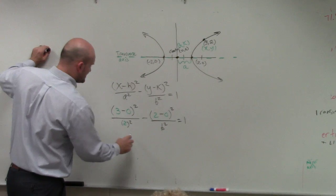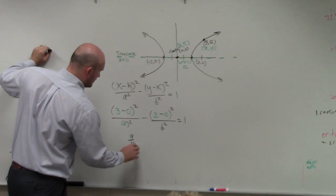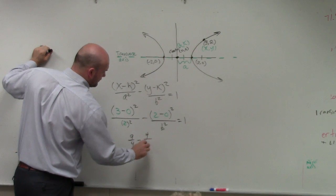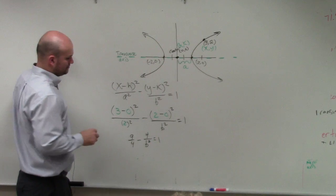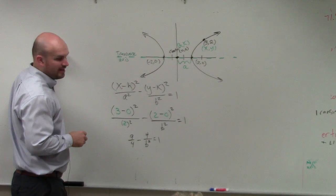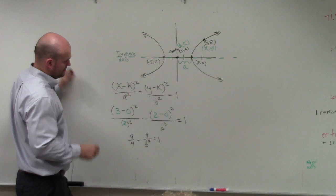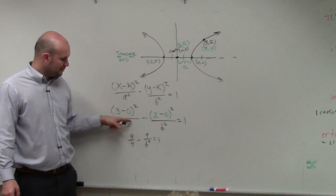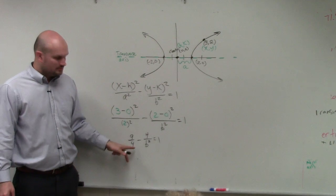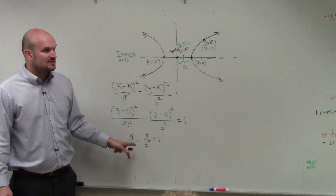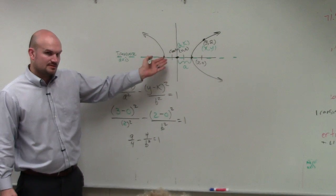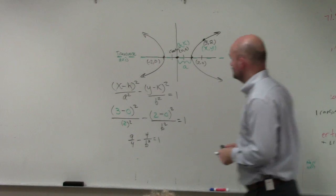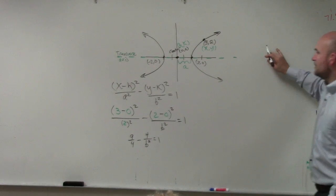So 3 minus 0 is 3. 3 squared is 9. So it's 9 over 4 minus 2 minus 0 is 2. 2 squared is 4. 4 over b squared equals 1. Follow me? 3 minus 0 is 3. 3 squared is 9. 2 squared is 4. Now we need to be able to solve this. So I'm going to need a little bit more room. Actually, I have room over here, don't I? Yeah, I can do it over here. All right.